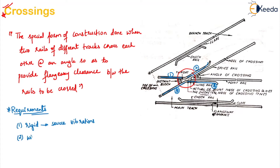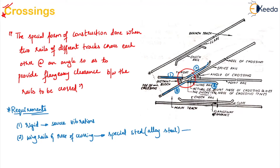The next requirement is your wing rails and nose of crossing. These should be made of certain special alloy steel so that they resist the heavy wear which is coming onto the crossing. Normally in crossing there will be a lot of wear. So in order to resist that, the wing rails — the rails of the crossing are nothing but wing rails — and the nose of crossing, which is nothing but this tip, should be made of some special alloy or high strength steel so that they resist wear, especially during the movement of the wheels. That is one of the major requirements.